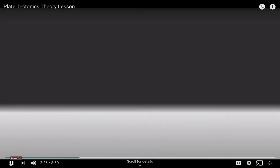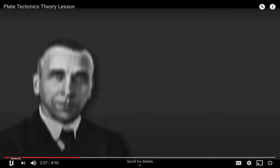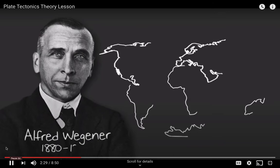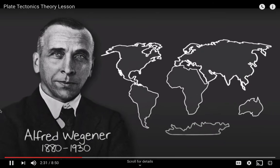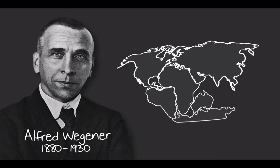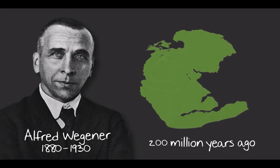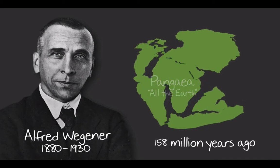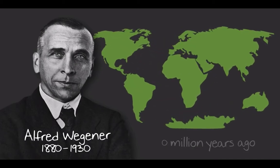Let's start with the history. In the early 1900s, a scientist named Alfred Wegener noticed that the coastlines of several continents look like they fit together, similar to puzzle pieces. He believed that around 200 million years ago, all of the continents were joined together in one large supercontinent that he called Pangaea, which is Greek for 'all the Earth.' Over the course of millions of years, Pangaea broke apart into the continents we know today, a process he called continental drift.